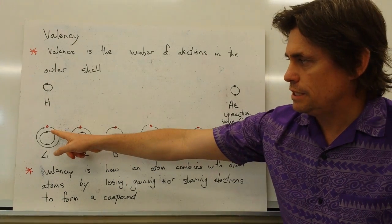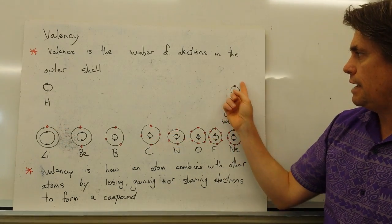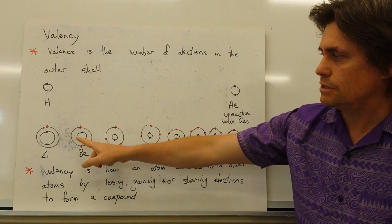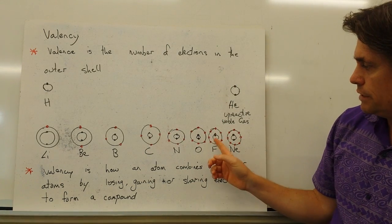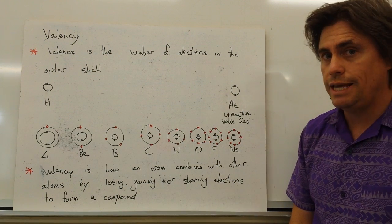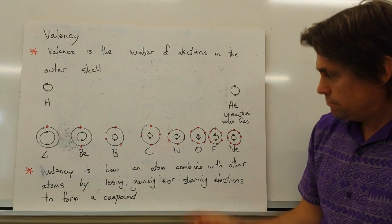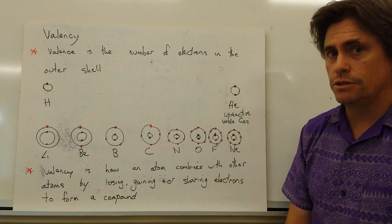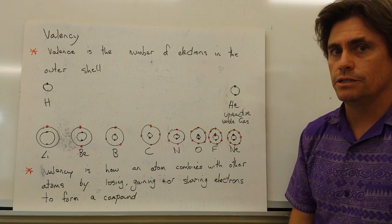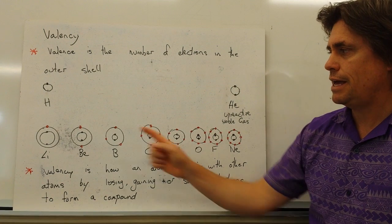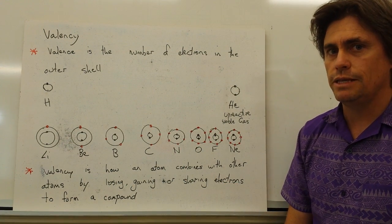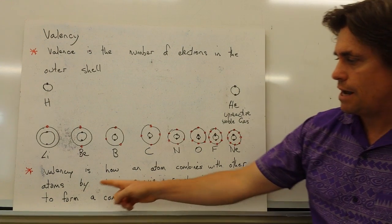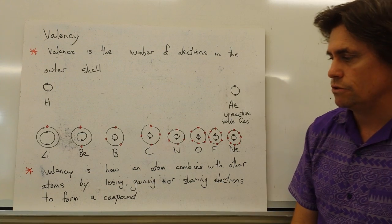Atoms do this either by losing electrons — if lithium loses one electron, it will then have two electrons in the inner shell. Similarly, beryllium could lose two electrons and then only have two, so it would be like helium. Fluorine, with seven in the outer shell, could gain one to have eight. Nitrogen could gain three to have eight. The key point is that atoms want to have this noble gas configuration because it's stable, though in achieving it they carry an overall positive or negative charge. We call this tendency to lose or gain electrons valency — valency is how an atom combines with other atoms by losing, gaining, or sharing electrons to form a compound.